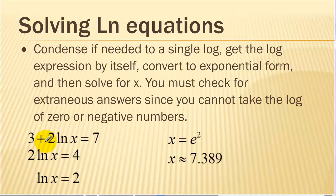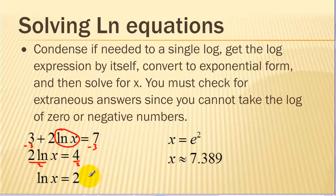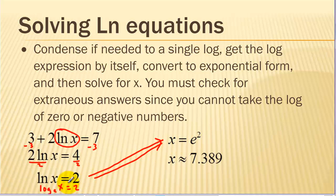Our first example has a single log, so we don't need to condense. We get the log by itself by subtracting 3 from both sides, then dividing by 2. Now we convert to exponential form. Remember, ln of x is log base e of x, so the base is e, and the 2 and x change places. Then we calculate the result. This is a positive number, so we won't run into issues with extraneous answers. If the result came out to be zero or negative, we would have to eliminate it as an extraneous answer.